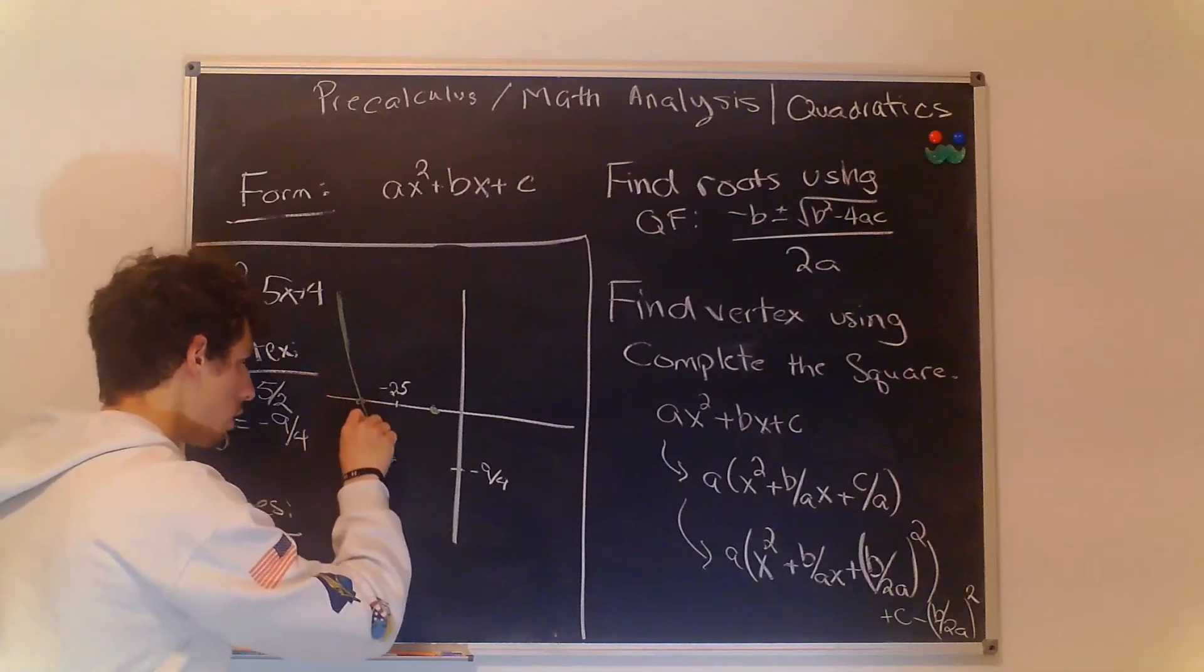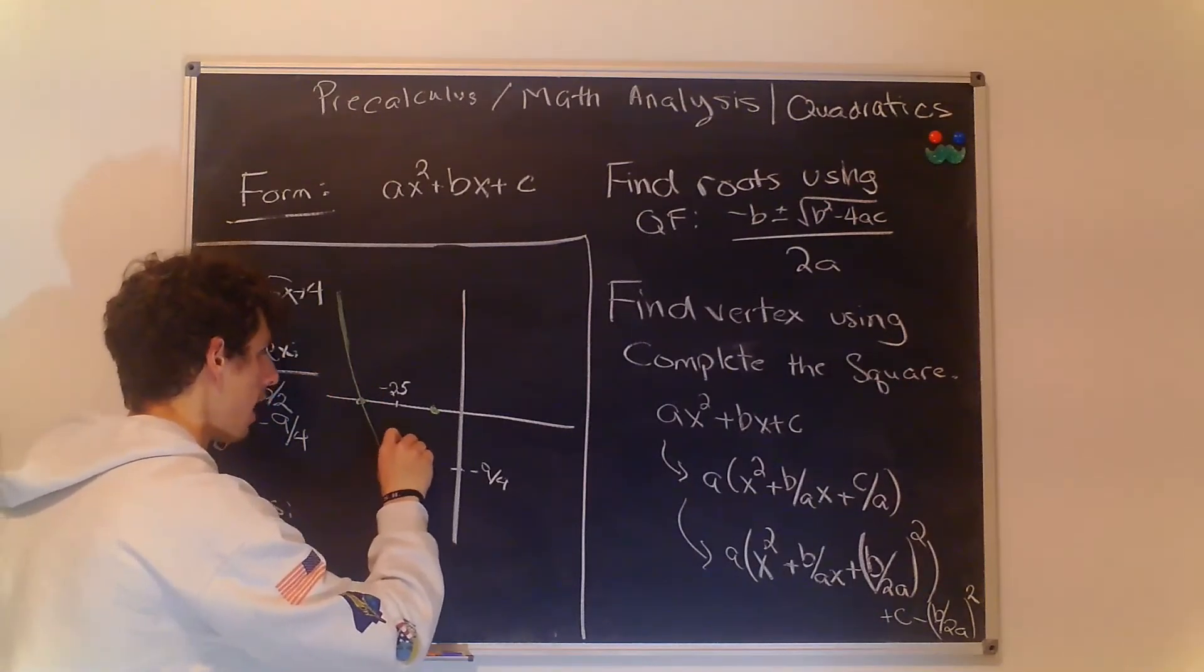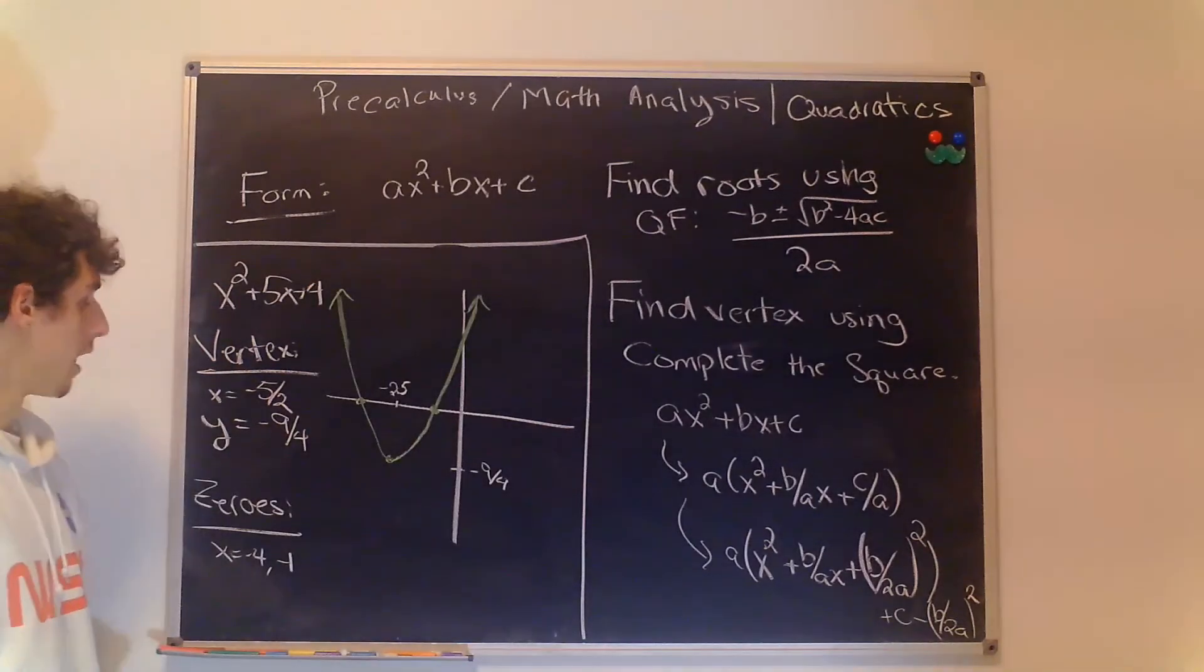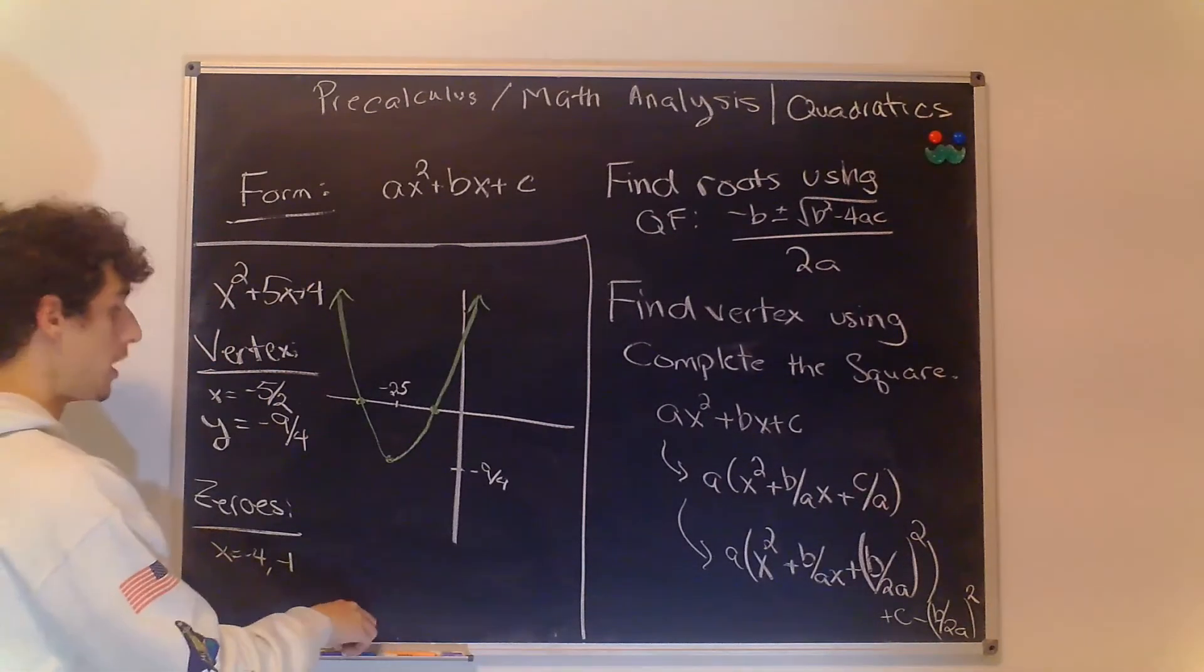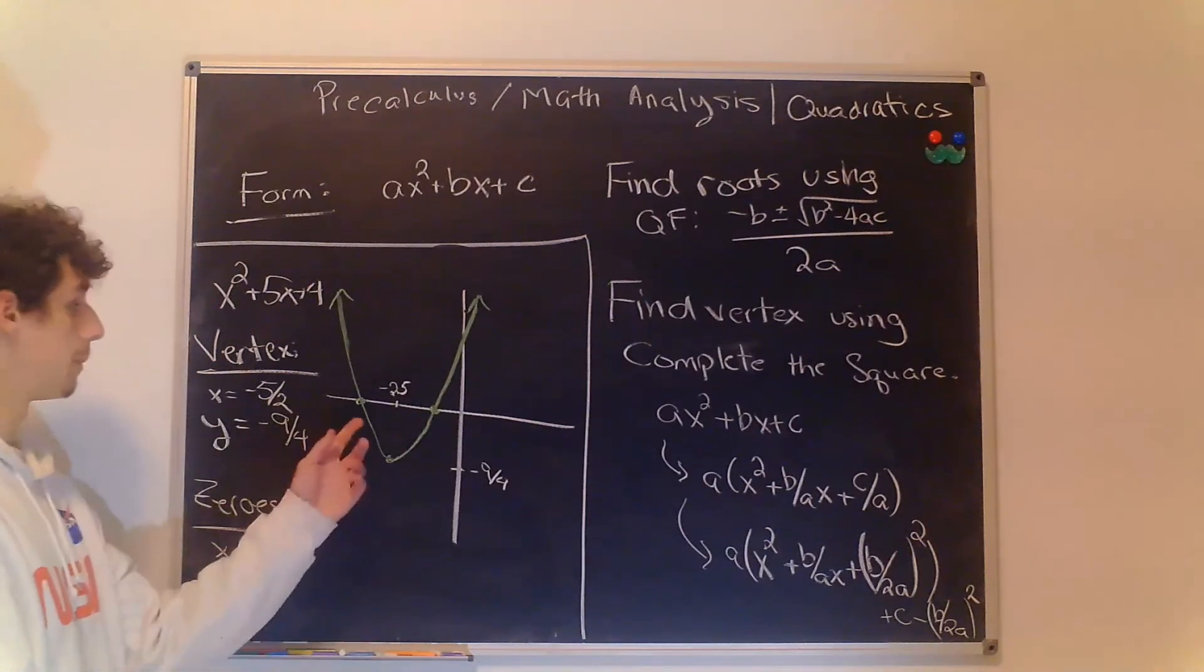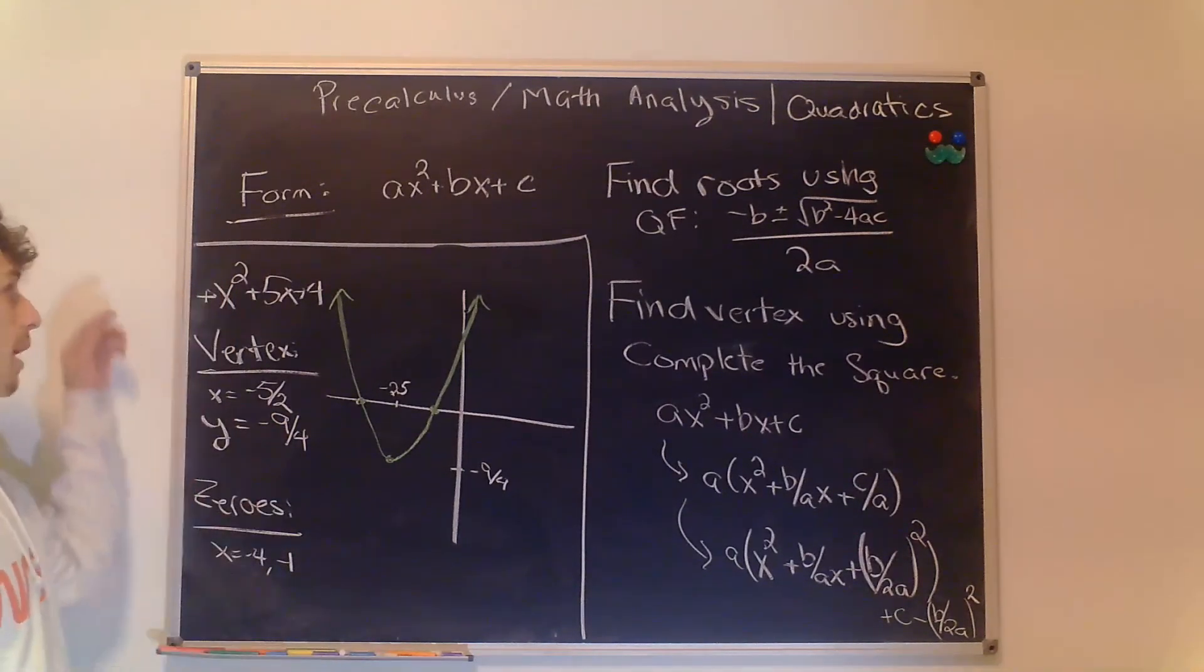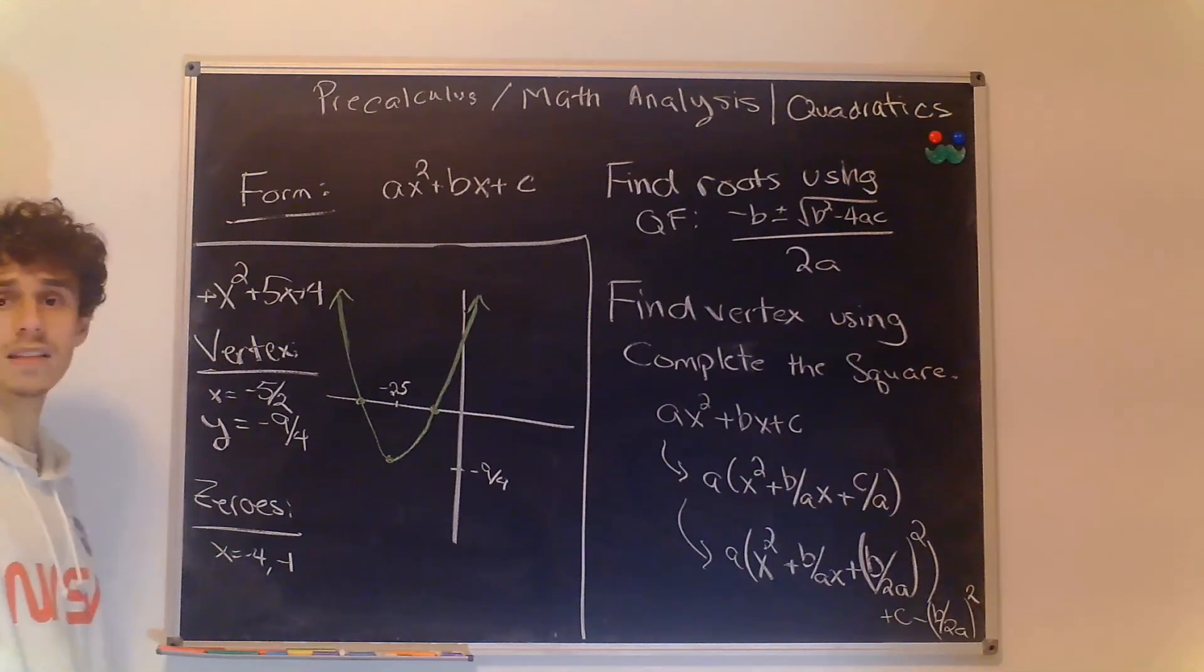And now we can draw our parabola like so. I want to point out one more thing about this parabola. We know it's upward sloping not only because of these three points but also because the leading coefficient of the parabola is positive and that's enough for now.